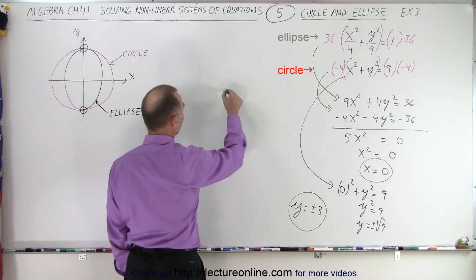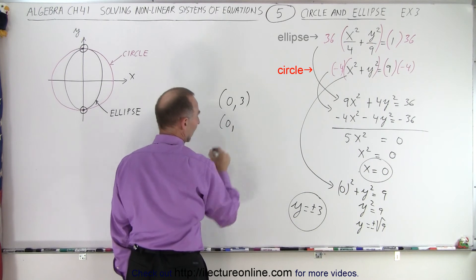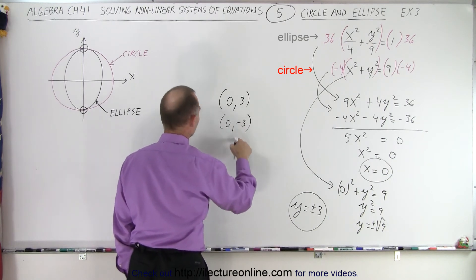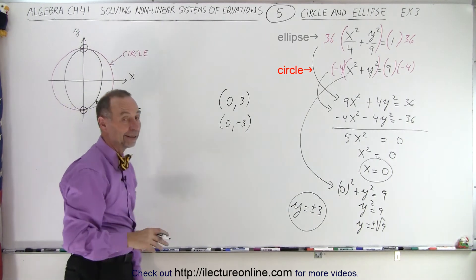Which means the two solutions are x equals 0 and y equals plus 3, and x equals 0 and y equals negative 3. And sure enough, those are the two points that we found. And that is how it's done.